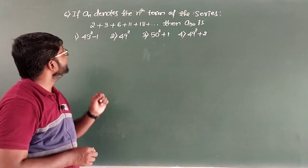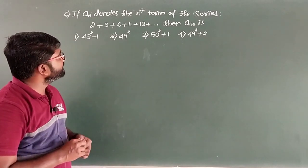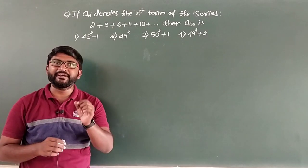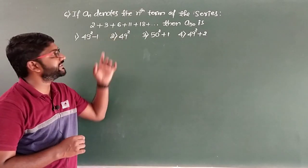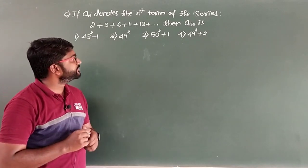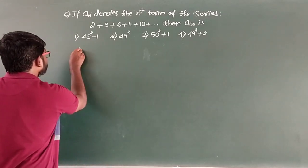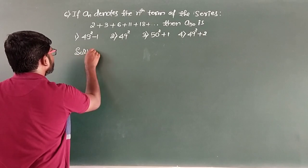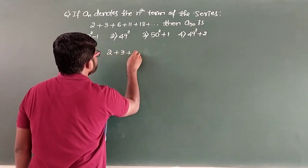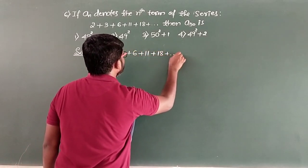Question 6: if AN denotes the nth term of the series 2 + 3 + 6 + 11 + 18 + ..., then A50 is — with options 49² − 1, 49², 50² + 1, and 49² + 2. Let us examine the series.